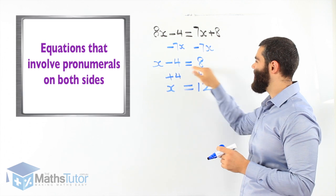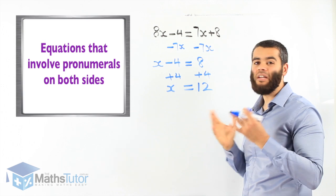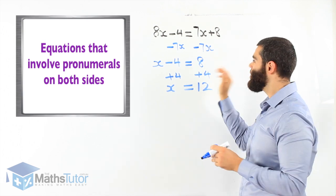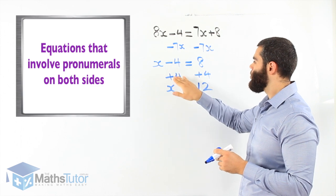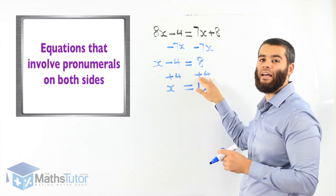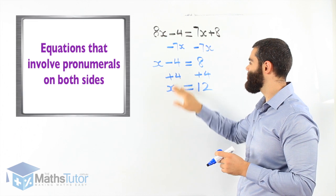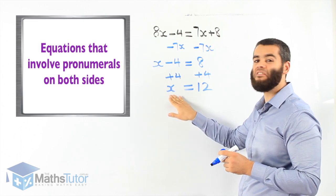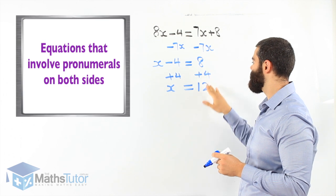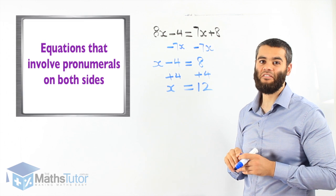We have a simple equation: x minus 4 equals 8, meaning something take away 4 equals 8. We add 4 on one side and add 4 on the other side. Minus 4 plus 4 is gone, we're left with x, and 8 plus 4 is 12. So x is 12. It's that easy.